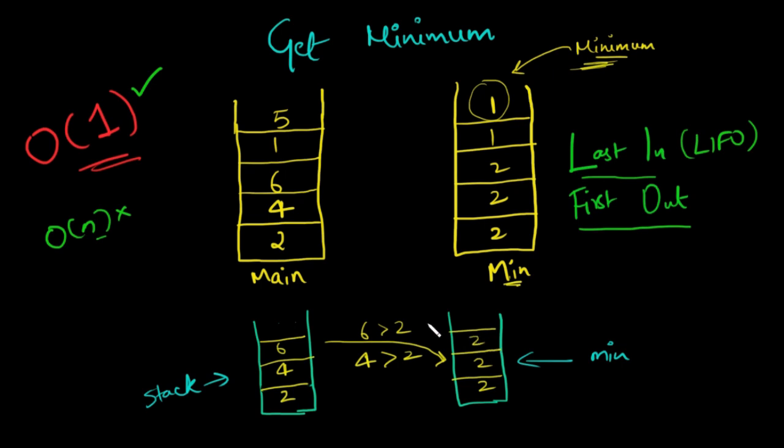Let us take an example and trace it out. Initially, let us assume that we have pushed 2, 4, 6, 1, 5 onto the stack. This will form the main stack. Based on the algorithm that I mentioned above, the min stack will look something like this. As you can see, the topmost element is the least element. So this is the trick. Fairly easy, right?